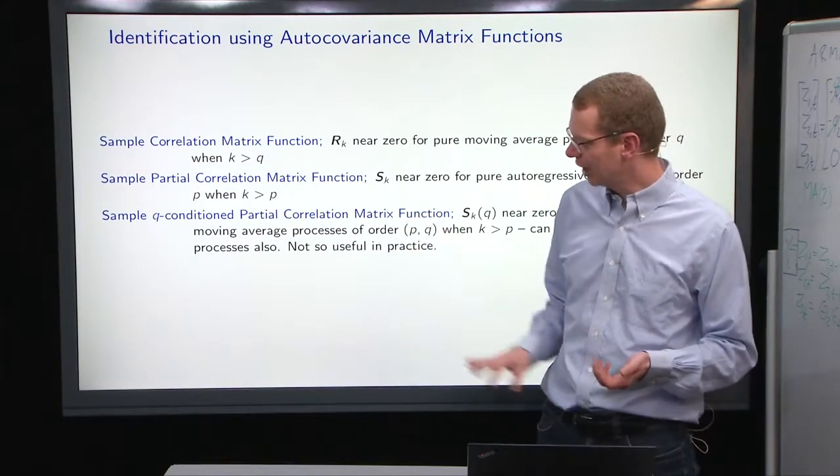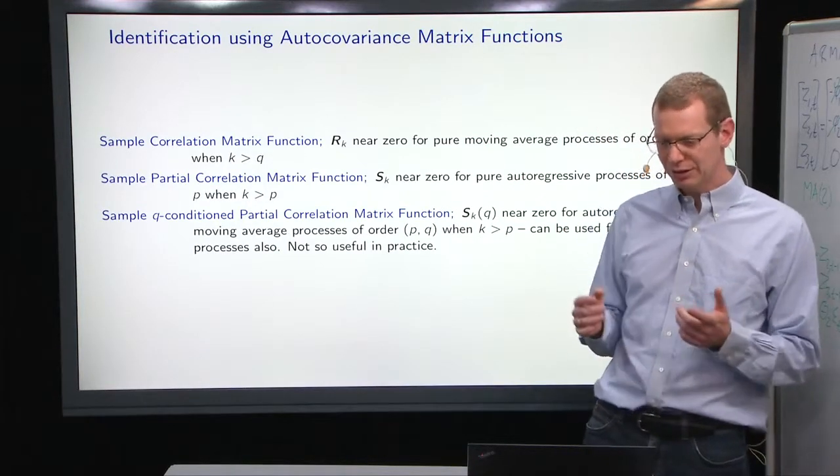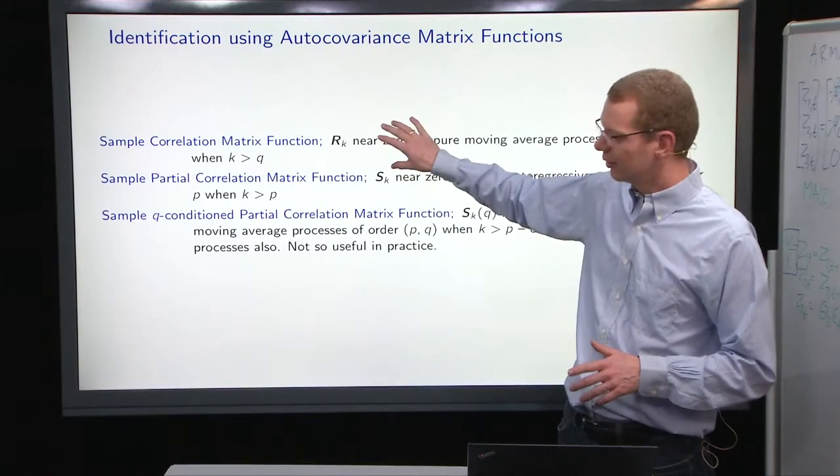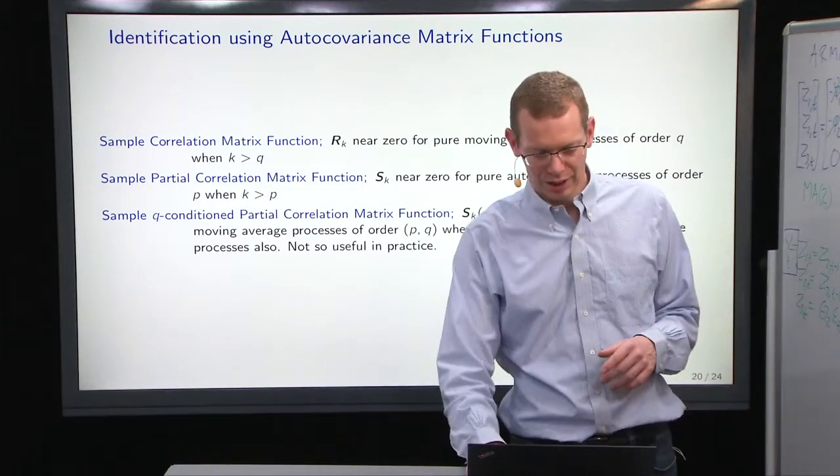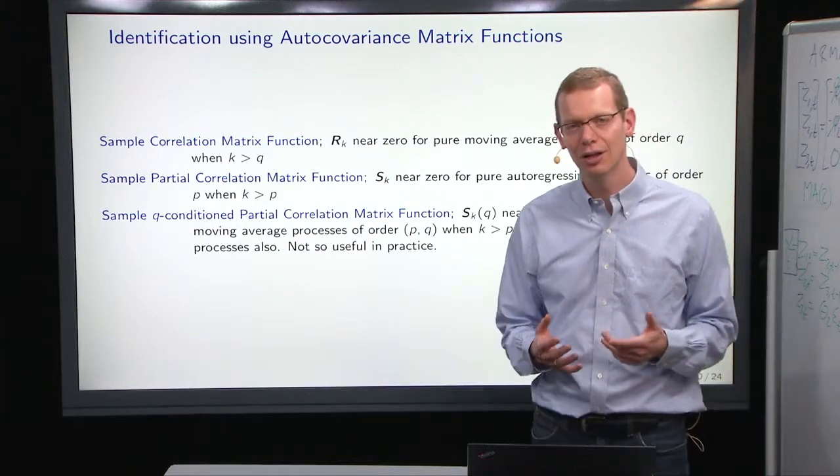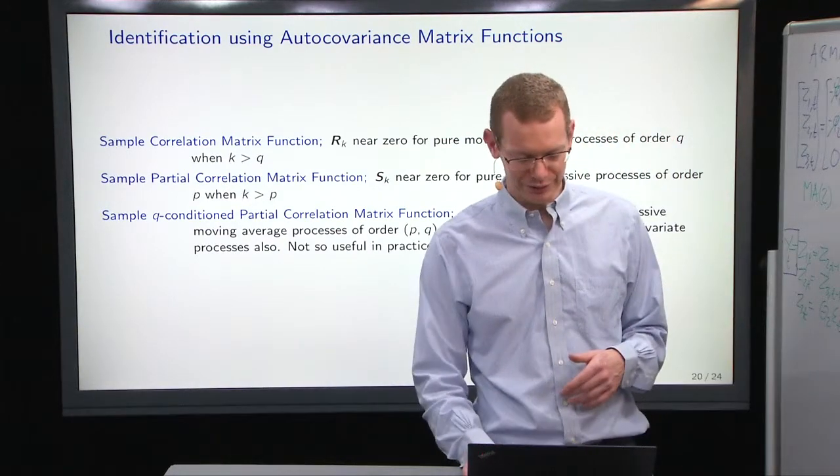There's also what is called sample Q-conditioned partial correlation matrix functions. It's complex and in general not so useful, so I just wanted to mention that it's there, but stick to what we've discussed using the usual ARIMA table, also meaning that if you have an ARMA model, then you have combinations and that's how life is.